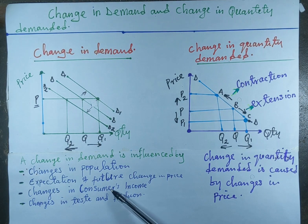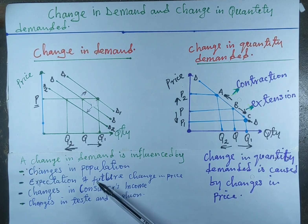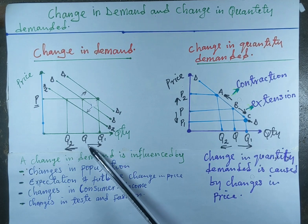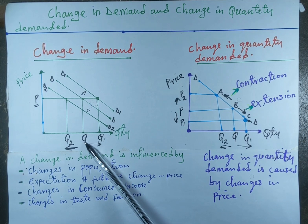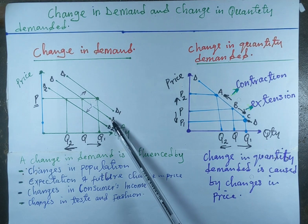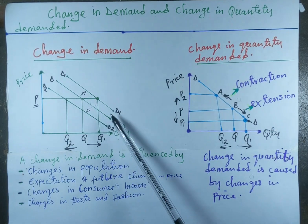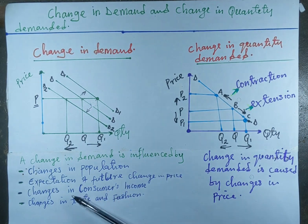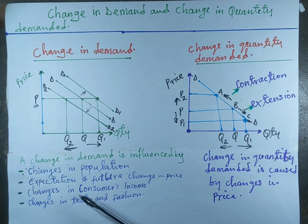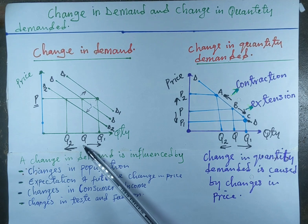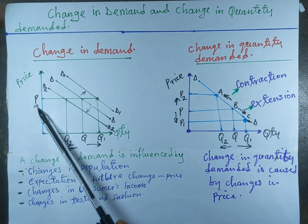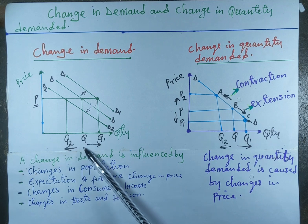We can also talk about changes in consumer income. An increase in income will increase their purchasing power and they will demand more goods, causing the quantity demanded to increase from Q to Q1, shifting the demand curve from DD to DD1. When consumer income falls, it will reduce their purchasing power and decrease the quantity demanded at the same price, causing the quantity demanded to fall from Q to Q2.